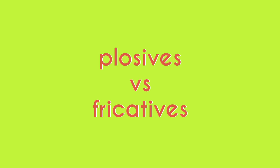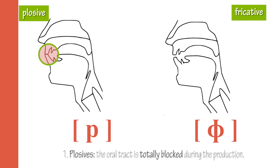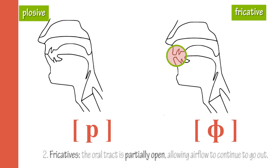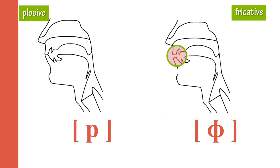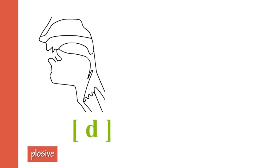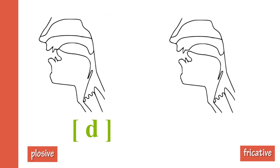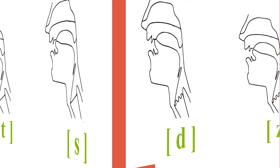You can also compare plosives with fricatives. The oral tract is totally blocked during the production of plosives, whereas during fricatives, the oral tract is partially open, allowing airflow to continue going out. If you pronounce 'pa' in a fricative way, you get a sound common in Japanese, like in 'Fuji.' Put your lips in the position for 'pa,' but open them slightly to allow continuous airflow. Similarly, if you make 'da' with a fricative release instead of a plosive one, you end up saying 'zzz.' The same applies to 'ta,' which gives you 'sss.'